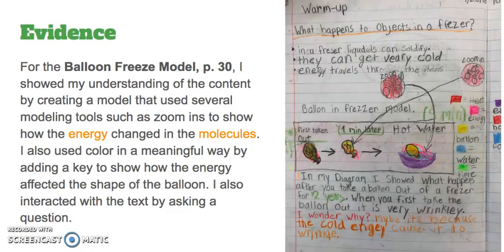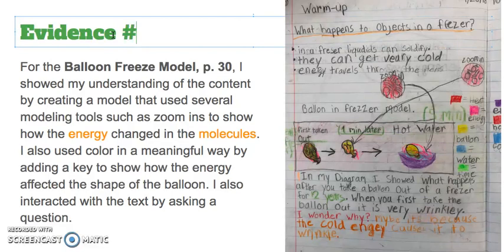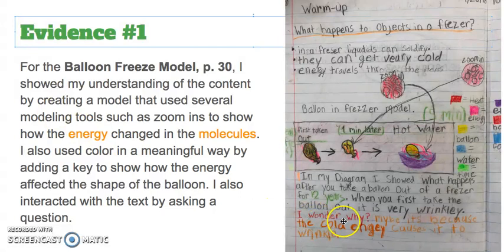Here's an example of one piece of evidence. You might write: 'Evidence Number One: For the balloon freeze model on page 30, I showed my understanding of the content by creating a model that used several modeling tools, such as zoom-ins, to show how the energy changed in the molecules.' The student also used vocabulary, added color in a meaningful way with a key showing how energy affected the shape of the balloon, and interacted with the text by asking and attempting to answer a question — 'I wonder why...'